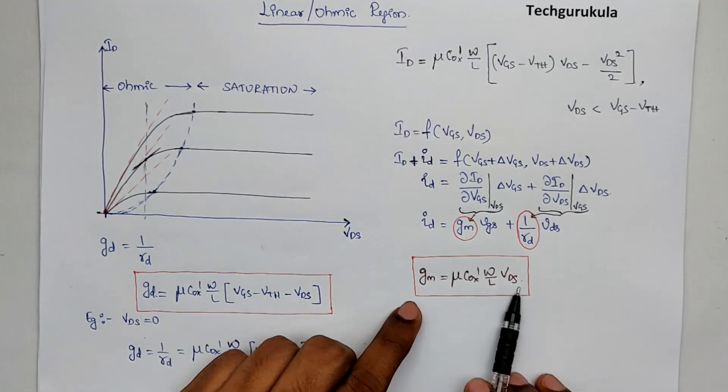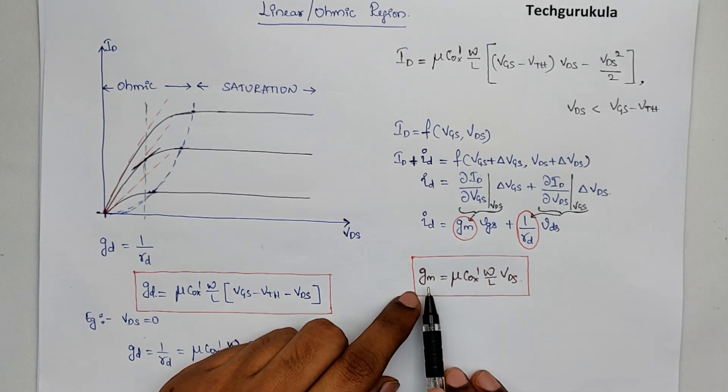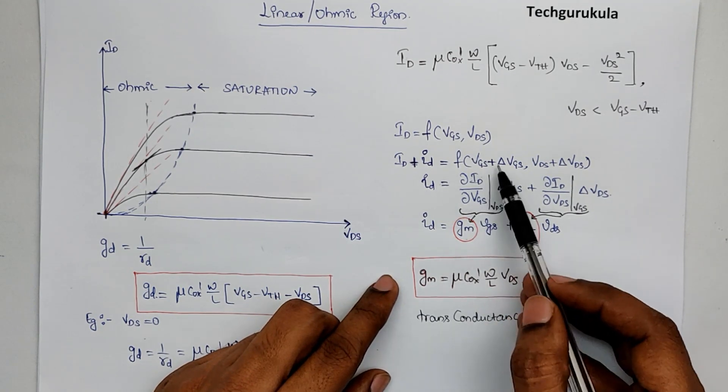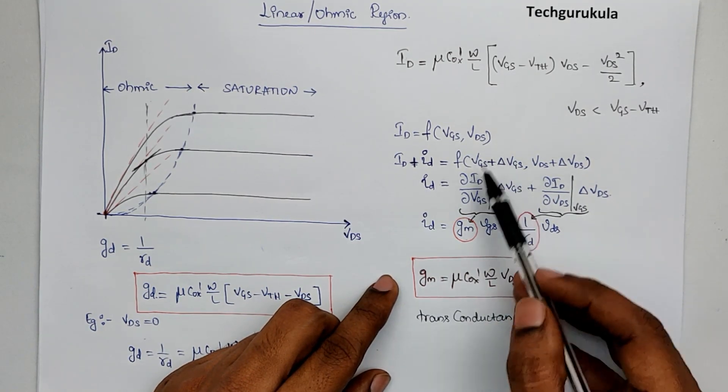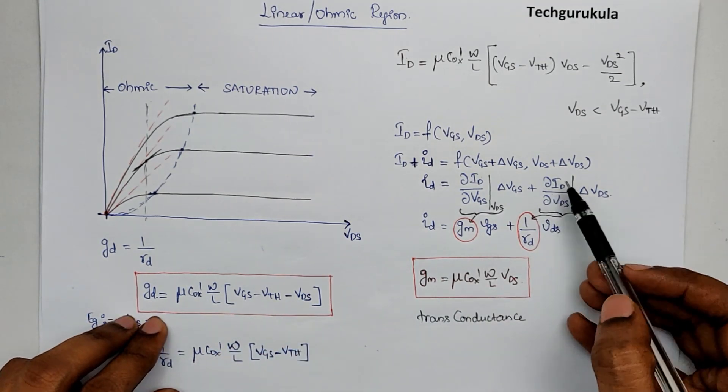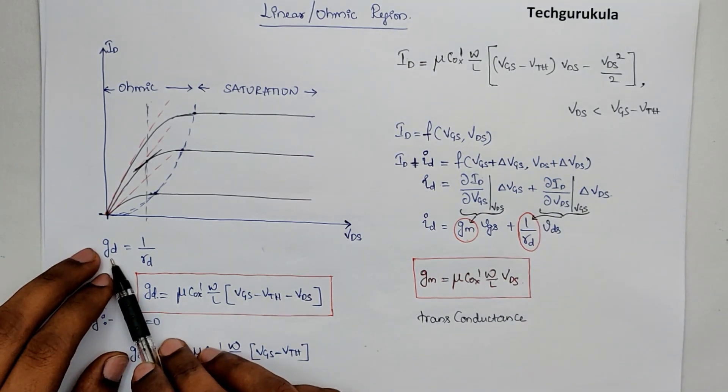So this is an important expression and this is called the transconductance. Because we are talking about drain current to the gate voltage variation. Whereas this we are talking about drain current to drain voltage. Hence, we call this drain conductance.